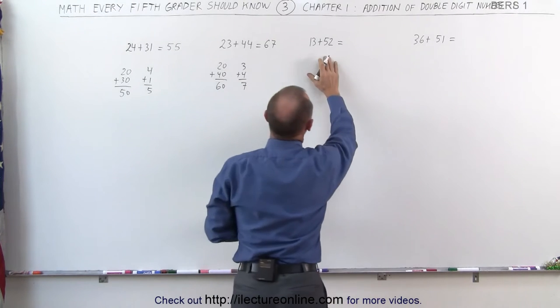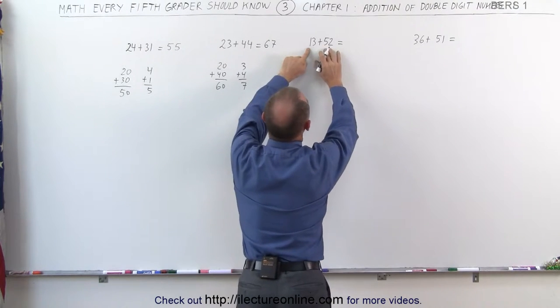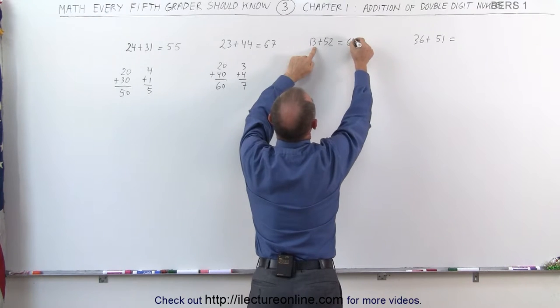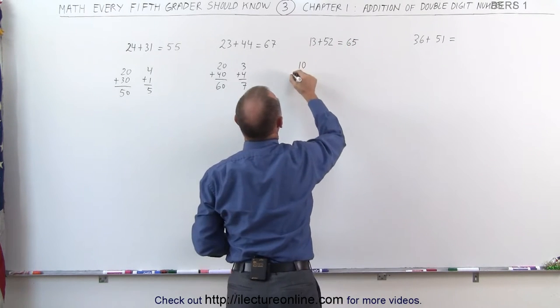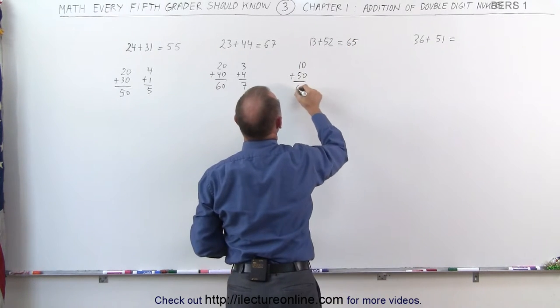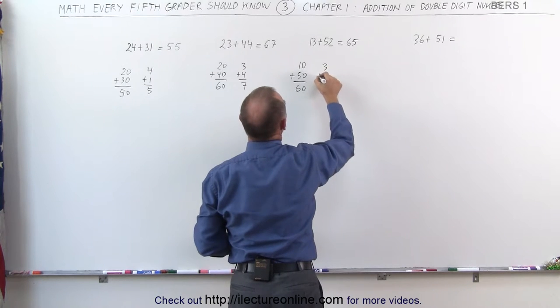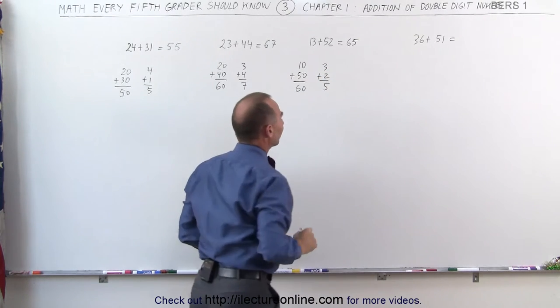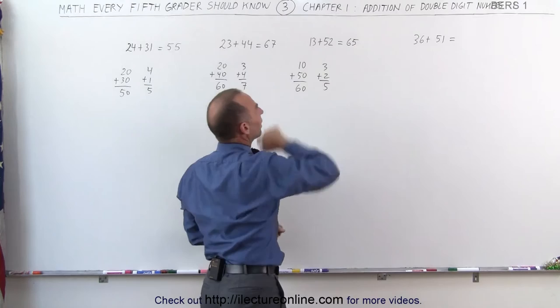The next exercise here, we have 1 plus 5, which is 6. 3 plus 2, which is 5. What we did was, we added 10 plus 50, which gave us 60. We added 3 plus 2, which gave us 5. 60 plus 5 is 65.